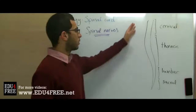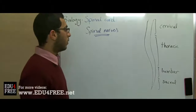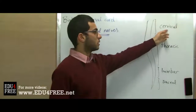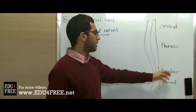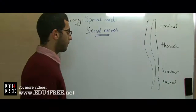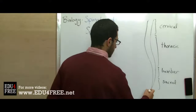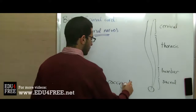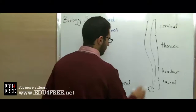The spinal cord extends all the way down the vertebral column, so we need to mention the parts of the vertebral column. We have the cervical part in the neck, the thoracic part at the back, the lumbar and the sacral part at the lower end, and at the very end we have the coccygeal region.